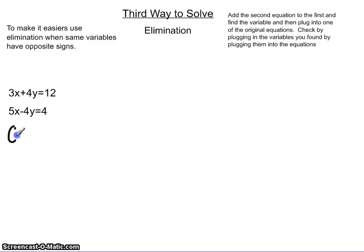So it would be 8x equals 16. Since the 4s cancel out and you would just add the 3x and the 5x and the 12 and the 4. So that would be x equals 2.